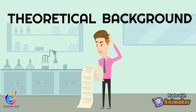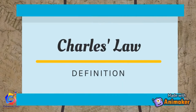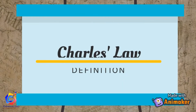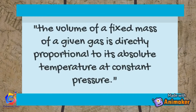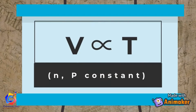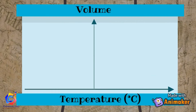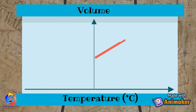Now let us proceed with the theoretical background for Part A of the experiment. According to Charles's Law, the volume of a fixed mass of a given gas is directly proportional to its absolute temperature, at constant pressure. In this graph, it clearly shows that the volume of a gas increases with temperature.